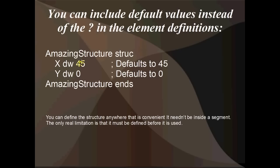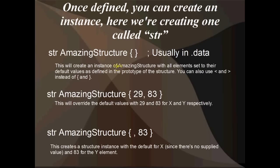If we just go back, 45 and 0. So X is going to be set to 45 and Y is going to be set to 0. In this next one down here, STR, AmazingStructure, and then in my curly brackets I've got 29 and 83. This would define STR as an instance of AmazingStructure with X equal to 29 and Y equal to 83.